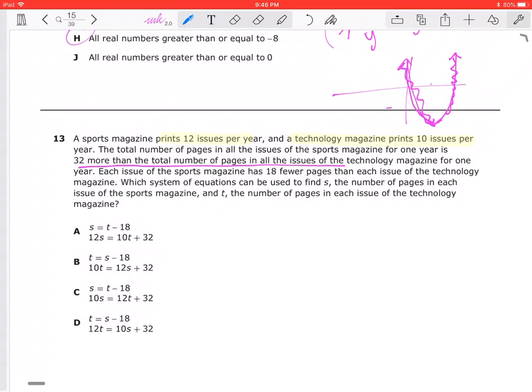Okay, so what is the system of equations used to find S, the number of pages in each issue of the sports magazine, and T, the number of pages in each issue of the technology magazine? S is the sports magazine and T is the technology magazine. The sports magazine is 12S and the technology magazine is 10T.